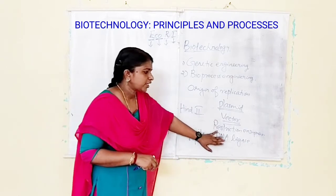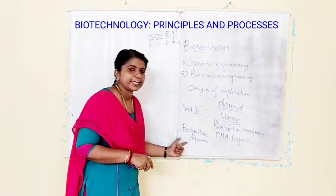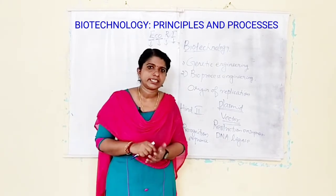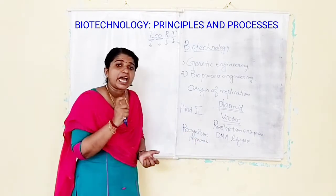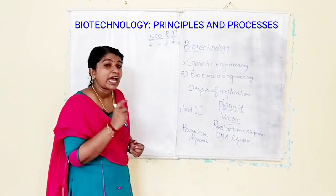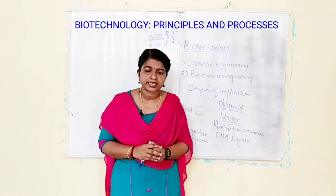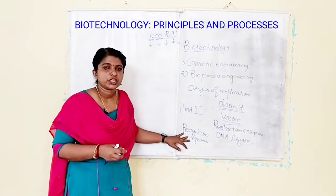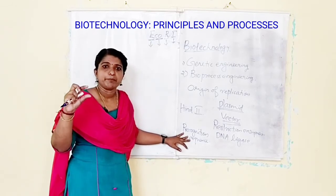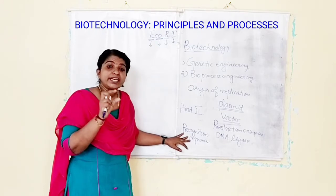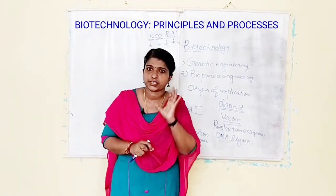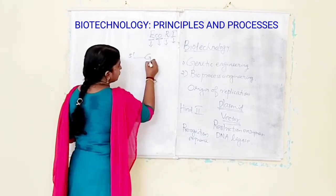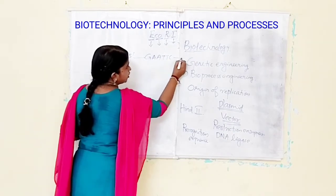These restriction enzymes identify a recognition sequence. Normally these recognition sequences are known as palindromic nucleotide sequences. Palindromic nucleotide sequences means the base pairs remain the same in both strands when the orientation of reading is kept constant. For example: 5'-GAATTC-3' on one strand.